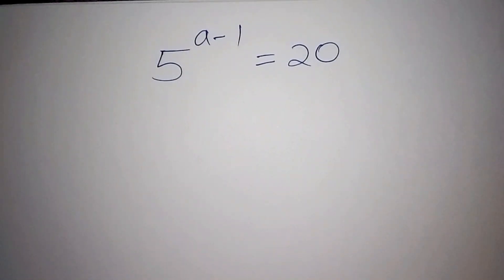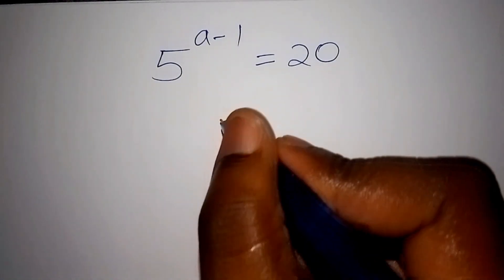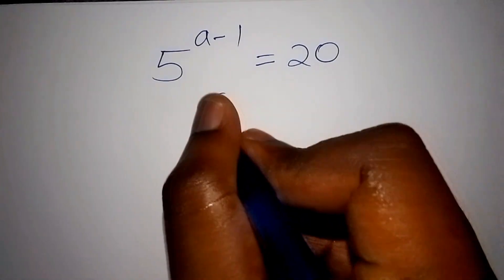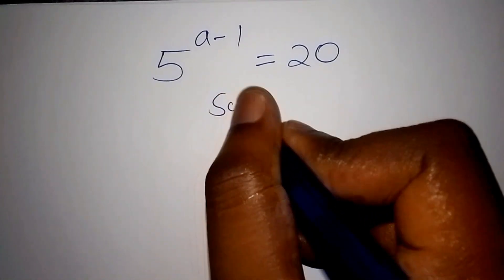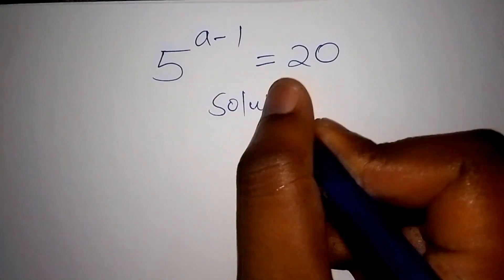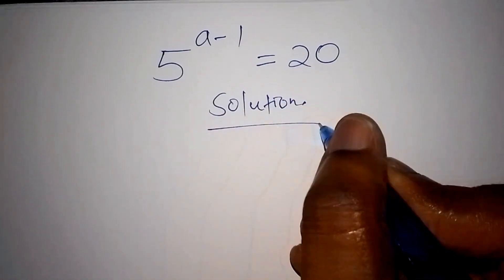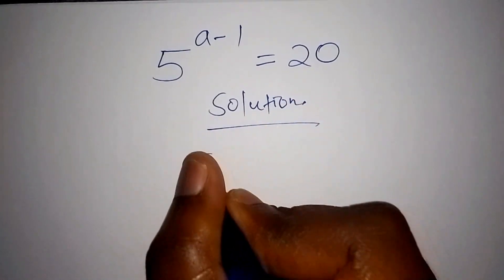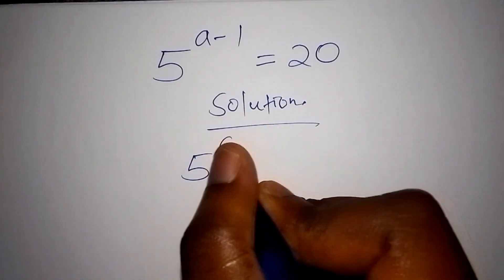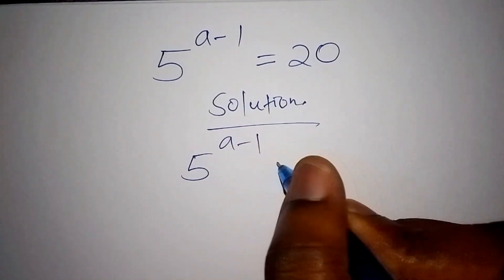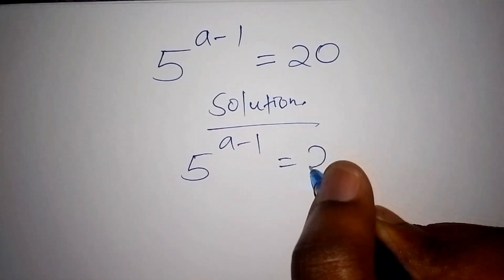Do you know how to solve this math problem? Let's now solve it together. So let's start with the solution. The math problem we have is: 5 to the power of a minus 1 is equal to 20.